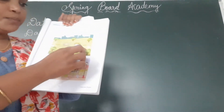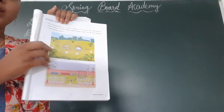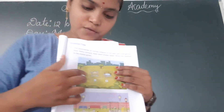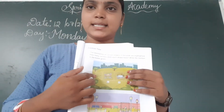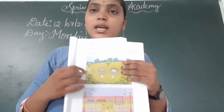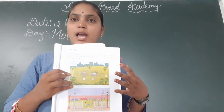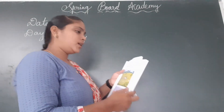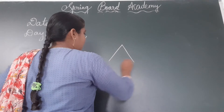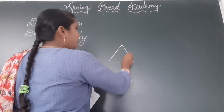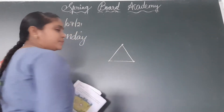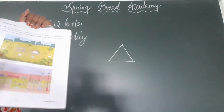Here, given shapes, you have to write the corners in the given boxes. So first, what shape is it? Yes, this is a triangle. Triangle has how many corners? One, two, three. So here you have to write three.